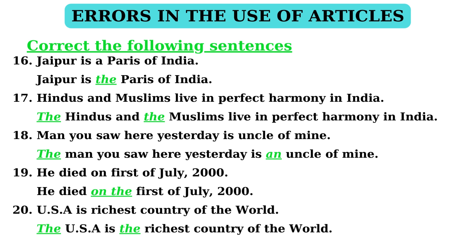In sentence 20: 'USA is the richest country of the world.' Definite article 'the' is to be added before states or countries having a descriptive name. The correct statement is: 'The USA is the richest country of the world.'